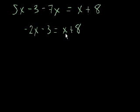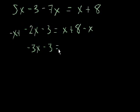Now if we want to take this x that's on the right hand side and put it over the left hand side, we just subtract x from both sides. The left hand side becomes minus 3x minus 3 is equal to, these two x's cancel out, it's equal to 8.